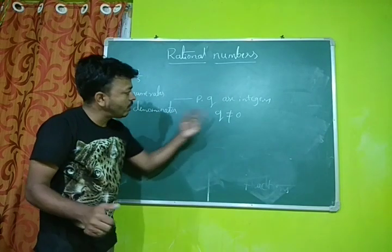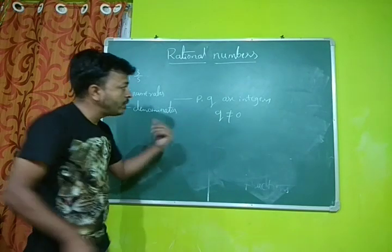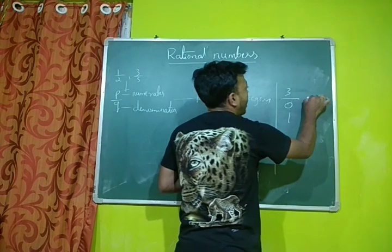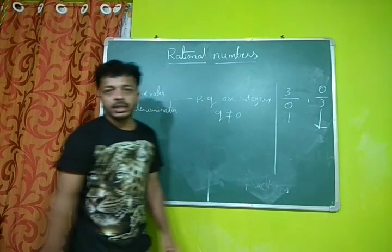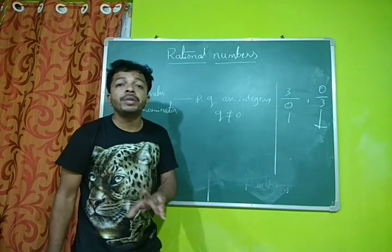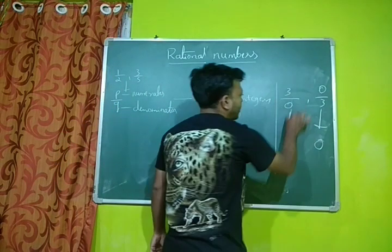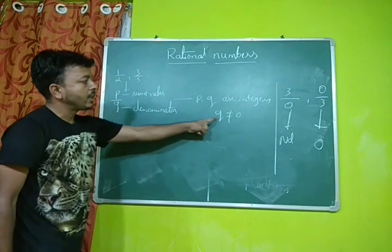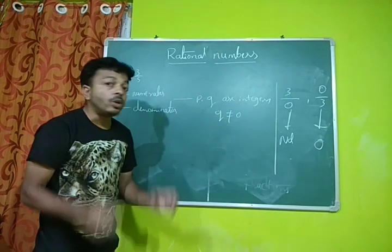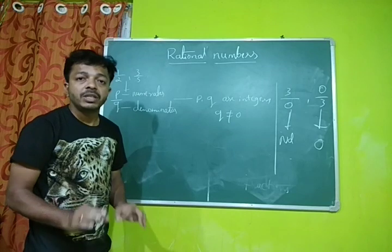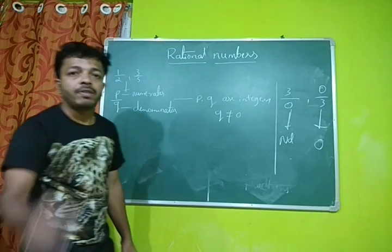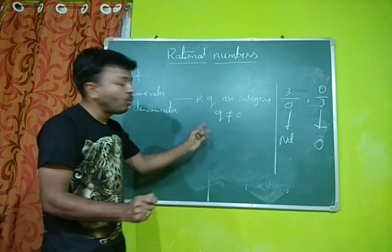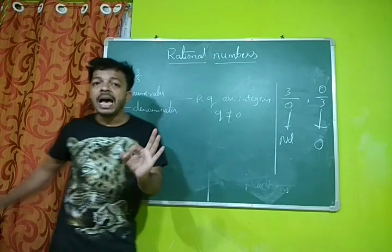One question arises: why is Q not equal to 0? If Q is equal to 0, then what is the value? Consider 3 upon 0. We know that 0 divided by any number is 0, but any number divided by 0 is not defined — there is no value for that. That's why Q is not equal to 0. So the definition of a rational number is: the number is in the form of P upon Q, P and Q are integers, and Q is not equal to 0.